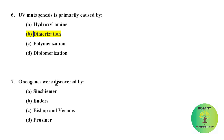Oncogenes were discovered by whom? Oncogenes are the genes that have the potential to cause cancer, and these were discovered by Bishop and Varmus.